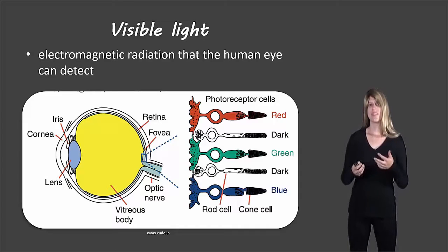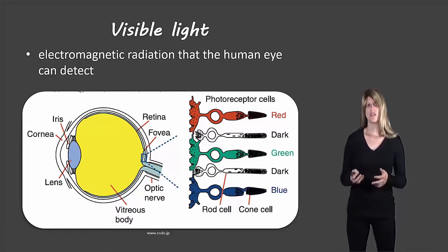The rod cells help us see details that help us see in the dark, but they can't see any color. The cone cells help us see color, and there are three different types. There's red, green, and blue. And each type can only perceive its particular color.